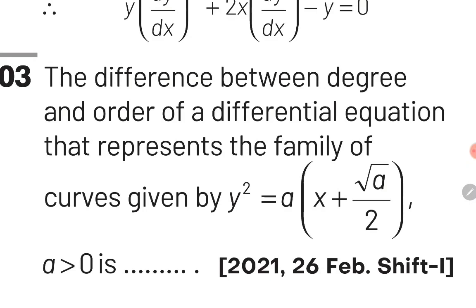The third question of this chapter is: the difference between degree and order of the differential equation that represents the family of curves given by y² = a(x + √(a/2)). To solve this question, first we will have to form the differential equation of this given curve using the same method. We will take the derivative on both sides and through this find the value of a, then back substitute into the main equation. Once we have the differential equation, the maximum order derivative in it is known as the order of the differential equation.